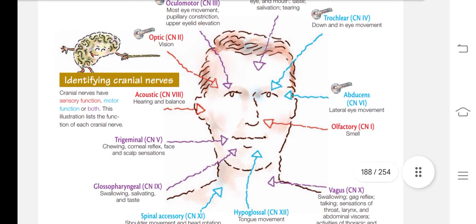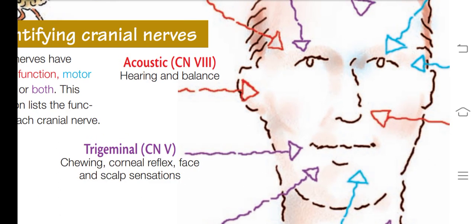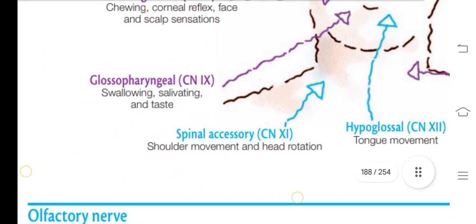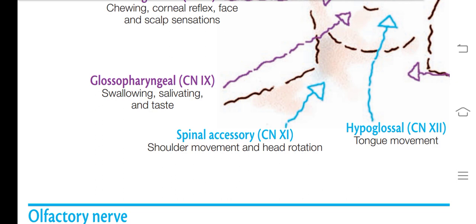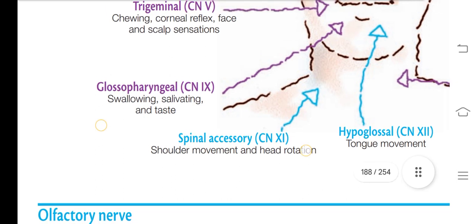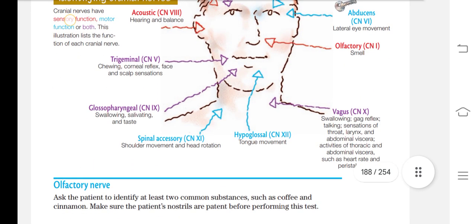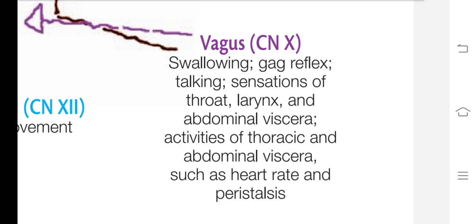Cranial nerve 8 is the acoustic nerve, responsible for hearing and balance. Cranial nerve 9 is the glossopharyngeal nerve, responsible for swallowing, salivating, and taste. Cranial nerve 10 is the vagus nerve — it is a very long nerve which extends to the lower body, controlling swallowing, sensation of the throat, larynx and abdominal viscera, heart rate, and peristalsis.